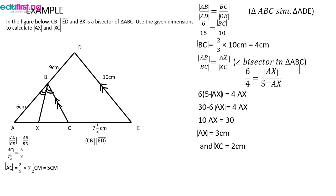To find XC, we apply the angle bisector theorem in triangle ABC: AB/BC = AX/XC. We have AB = 6, BC = 4, and AC = 5 cm. Cross-multiplying gives AX = 3 cm. Since the total AC is 5 cm, XC equals 5 minus 3, which is 2 cm. So AX is 3 cm and XC is 2 cm.